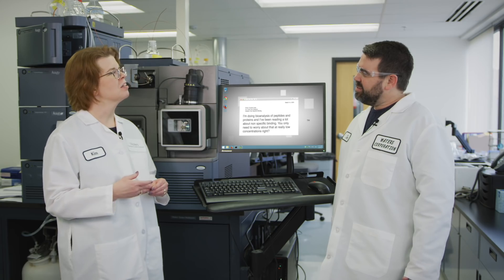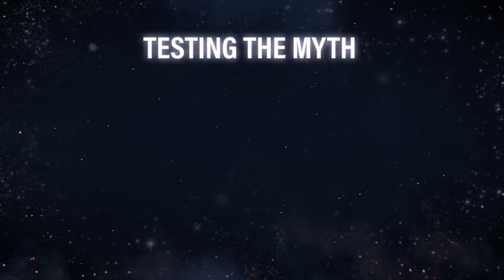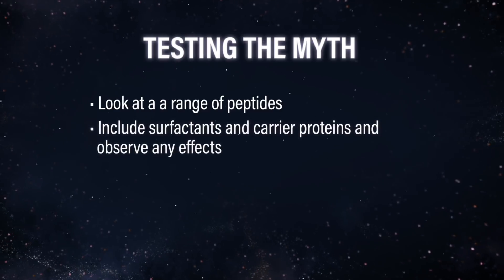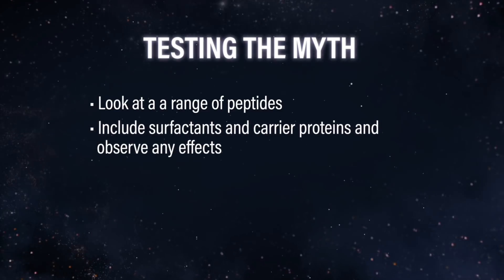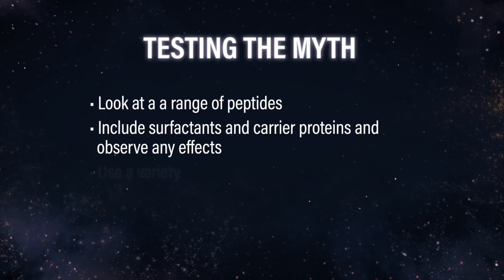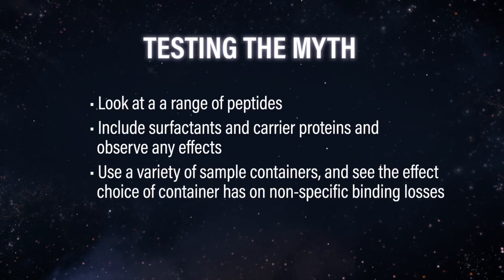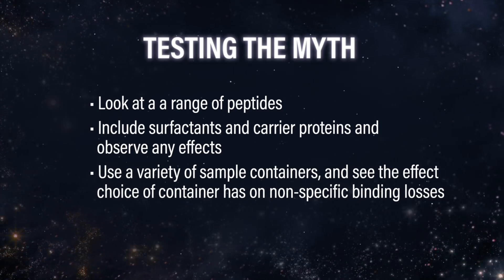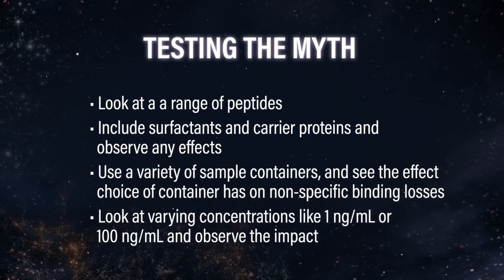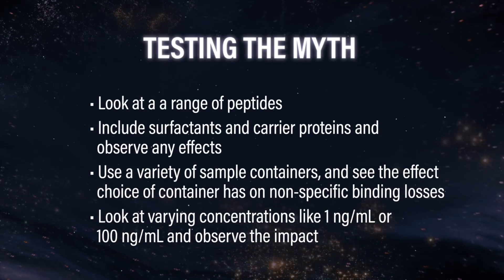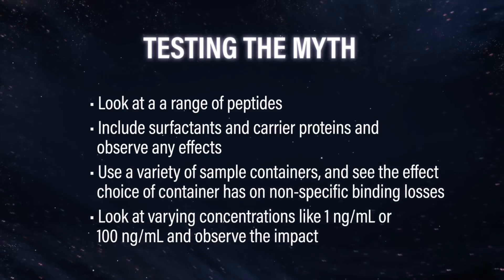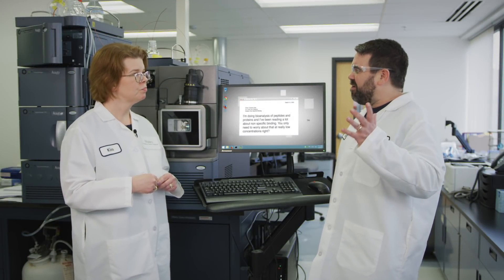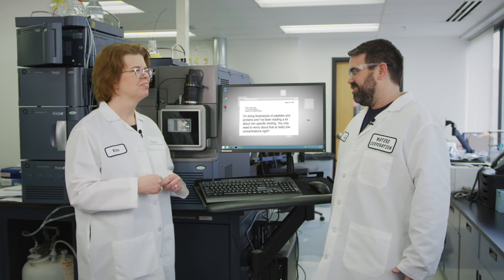I think we can do some myth busting here. We can design an experiment that will look at a range of peptides, and we should look at those surfactants and carrier proteins that people use to reduce nonspecific binding and see if there's any effect. We can look at a variety of sample containers and see what the choice of container has on nonspecific binding losses. And to specifically address this question, let's look at varying concentrations — something at a low concentration like one nanogram per mil and maybe 100 nanograms per mil — and see if there's a difference.